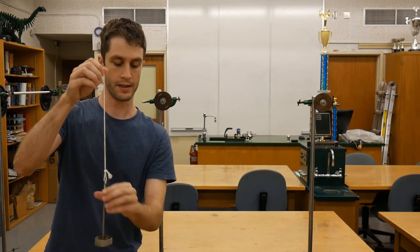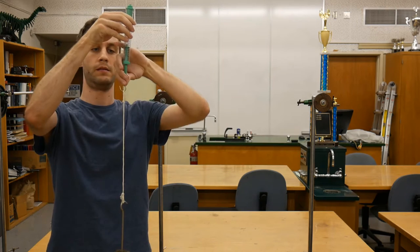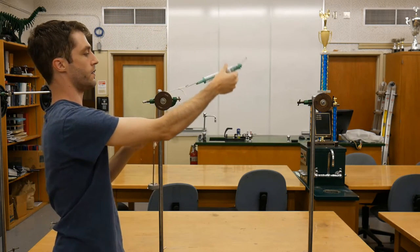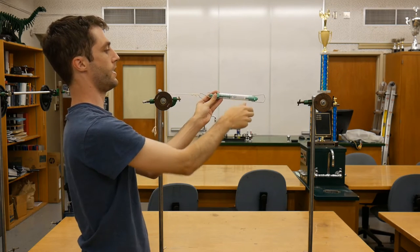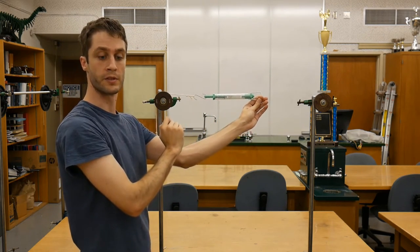Now take the same mass hanger and string, and attach them to your scale, and drape the other end over the pulley, and take a reading again in newtons.